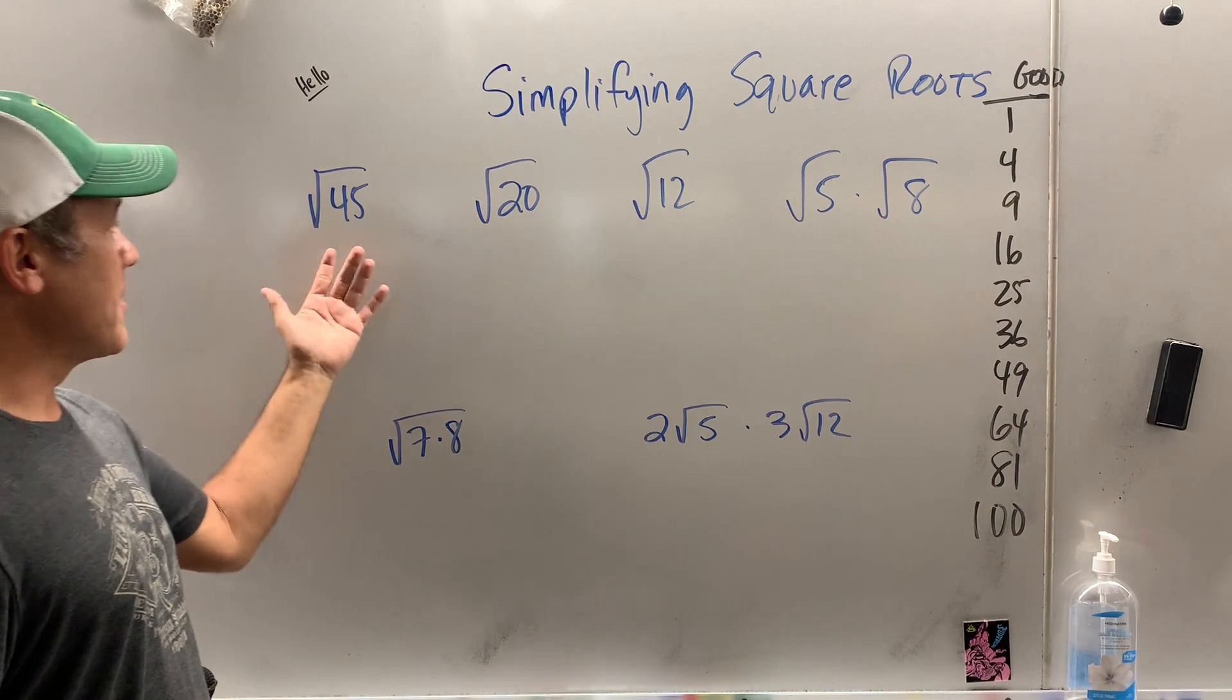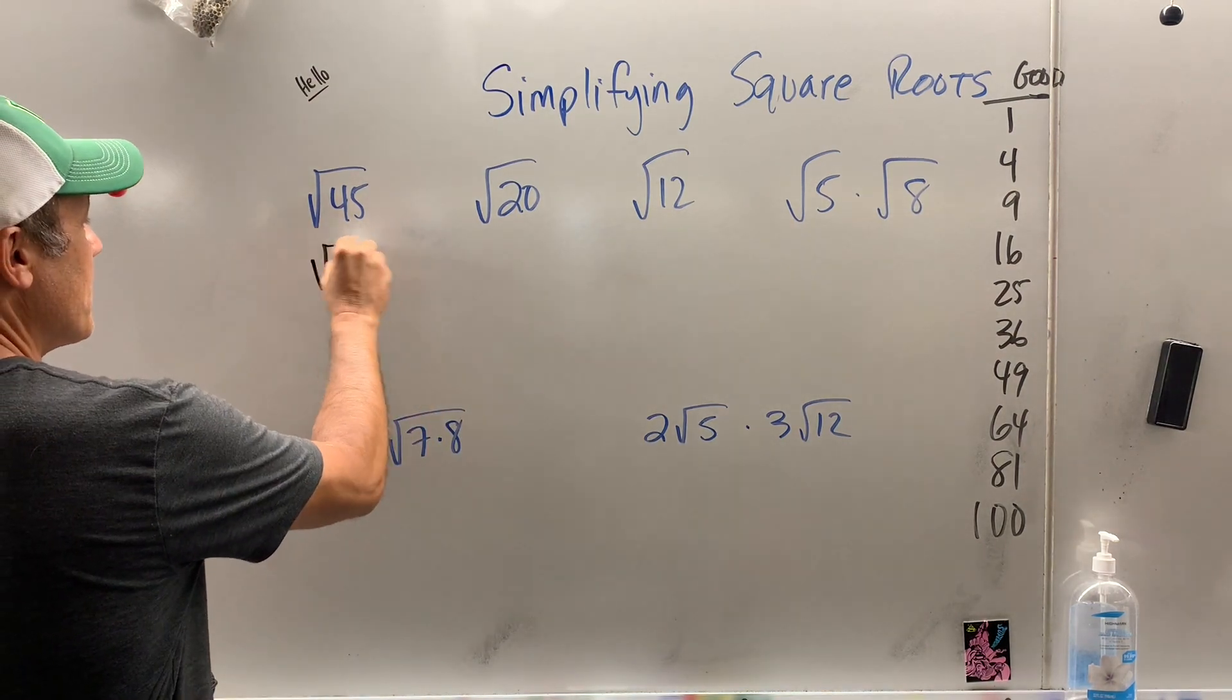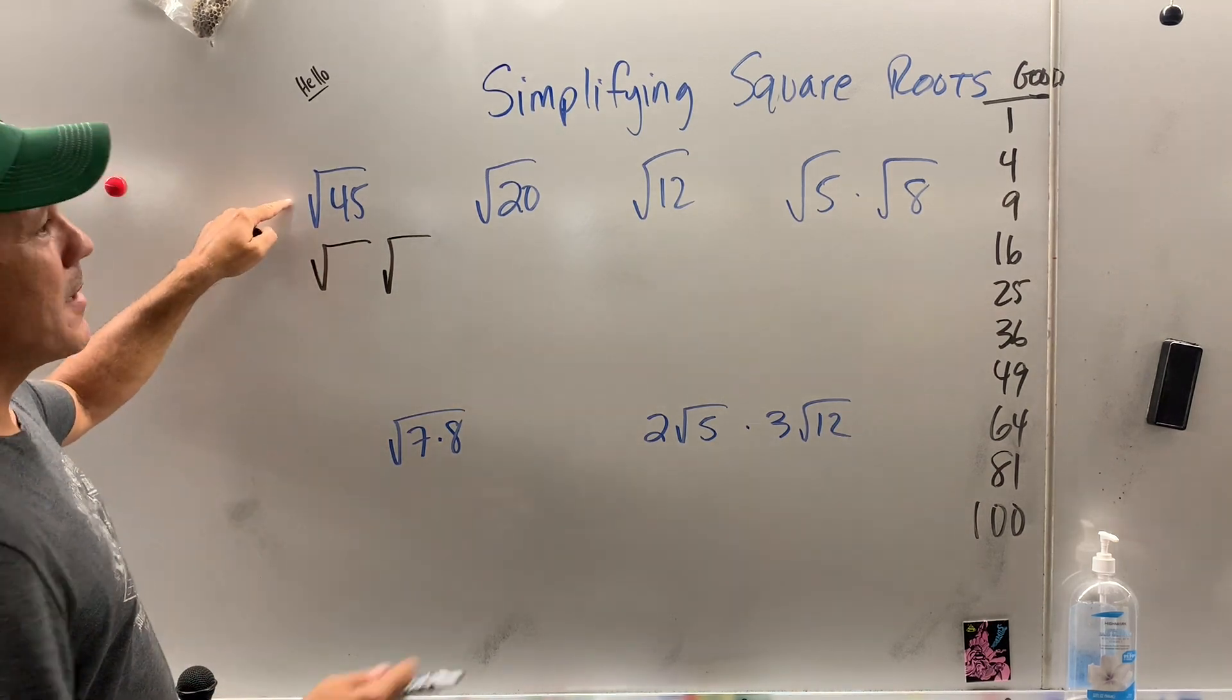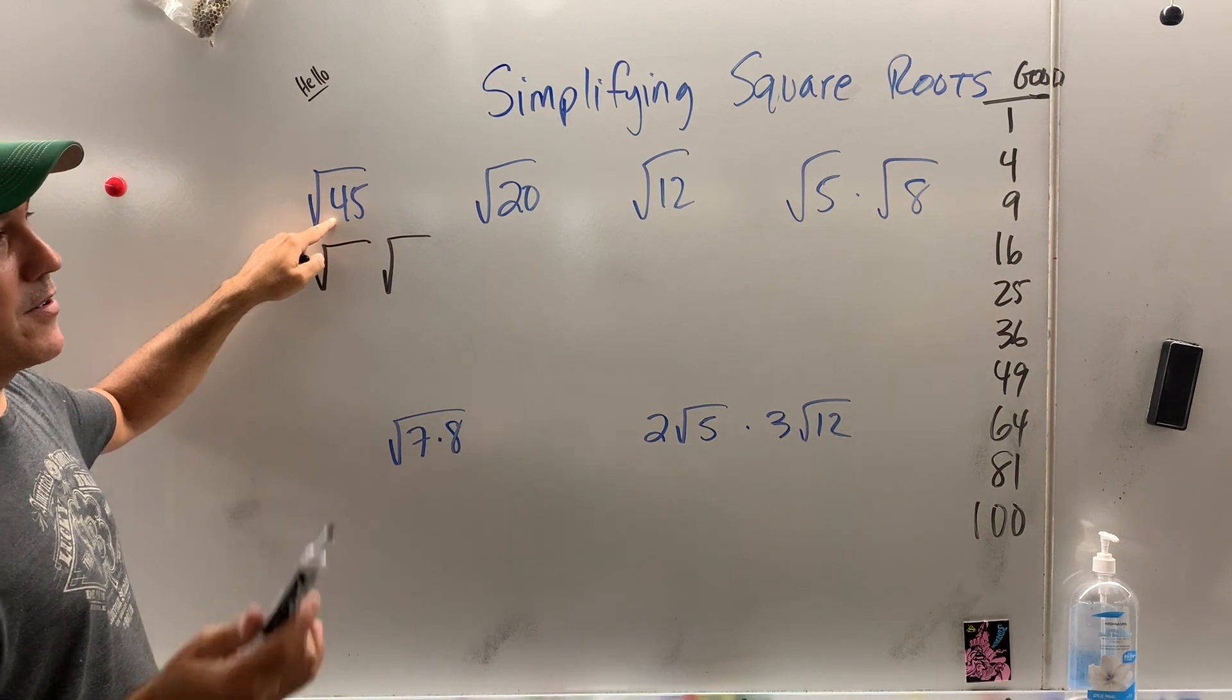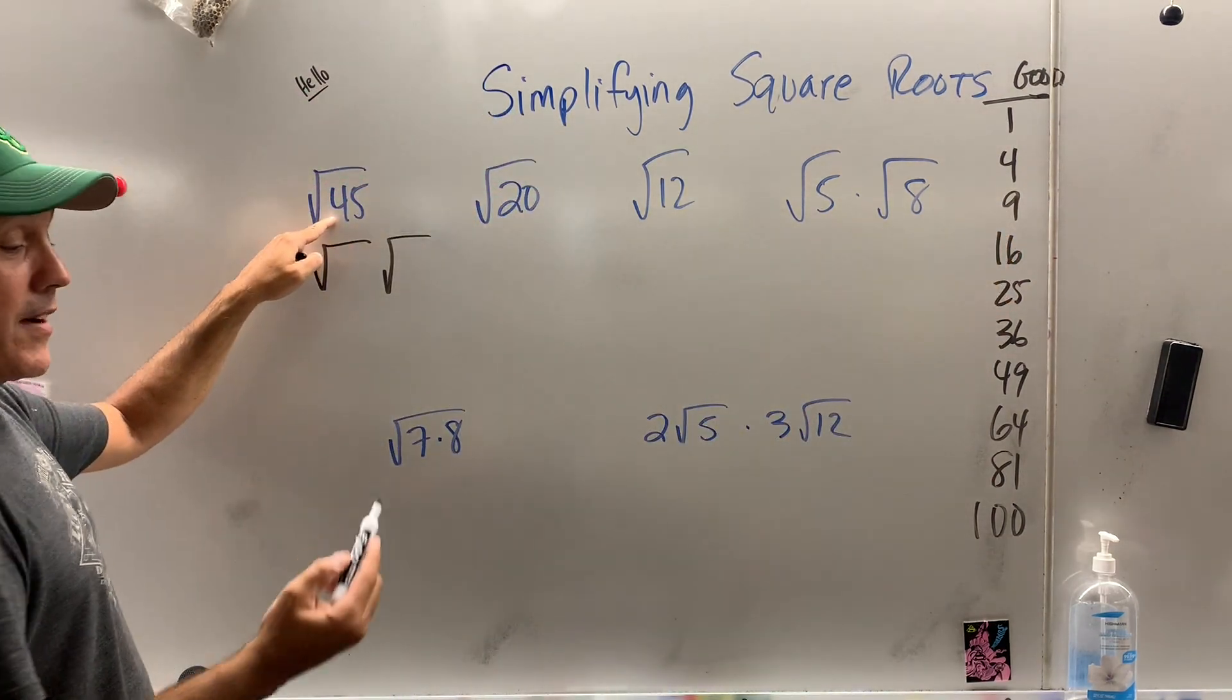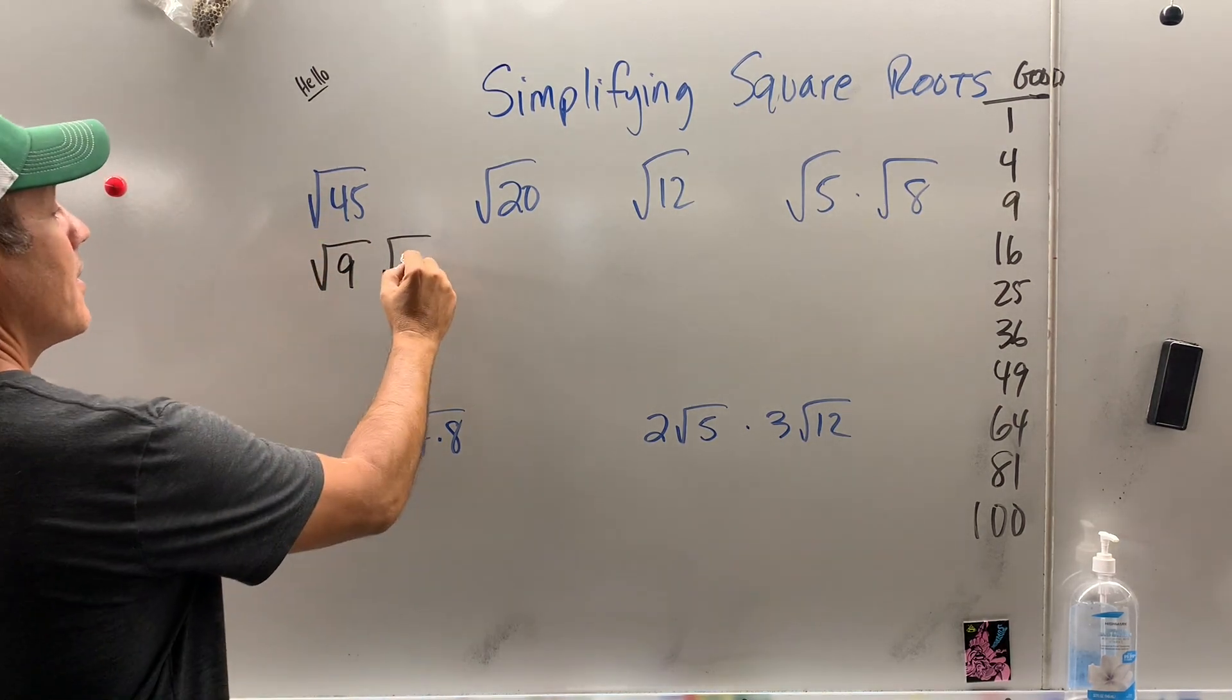So to simplify a radical, we have the square root of 45. Every single time you do the good and the bad, and hopefully there will be no ugly. We need a perfect square that divides evenly into 45. I don't know about you, but I could see it a mile away. It's none of these numbers because they're already bigger than 45. 9 goes into 45. So 9 is the good. Well 9 times what gives you 45? 5.